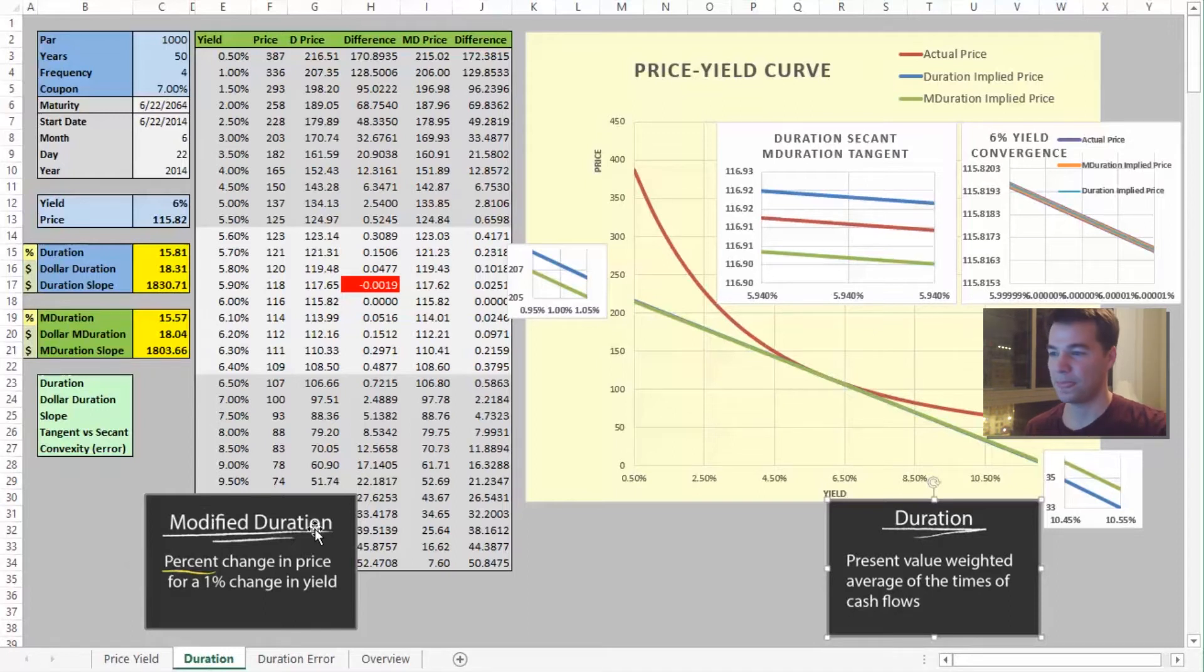So you may be wondering, now with our price-yield curve and these lines, which are given by duration and modified duration, durations in blue, modified durations in green, they're so close to each other that you don't really see duration, the blue line, except for peeking out just a bit above and a bit below here. This is a zoom in on the ends.